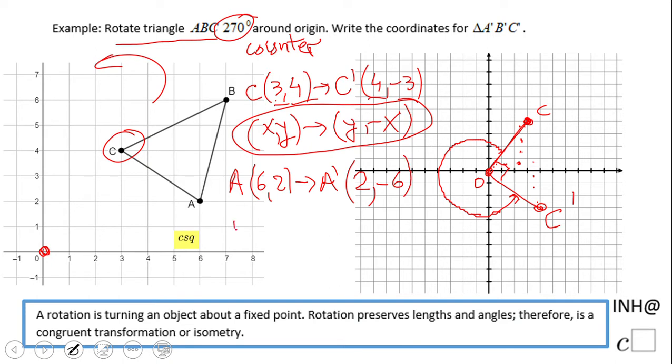becomes what? We're going to take the y first and keep it, don't change it. Take the x second and switch it: B' is (6, -7). And